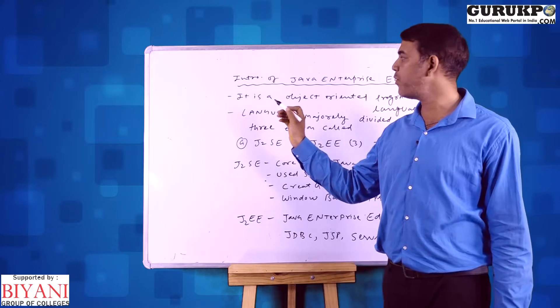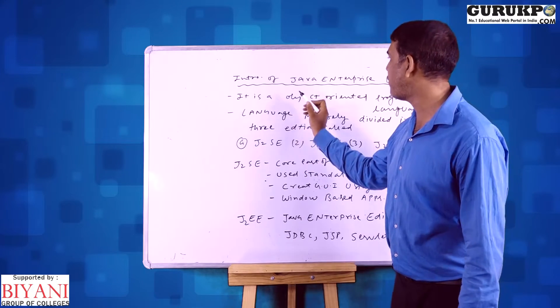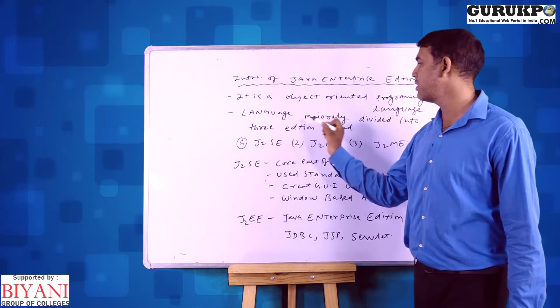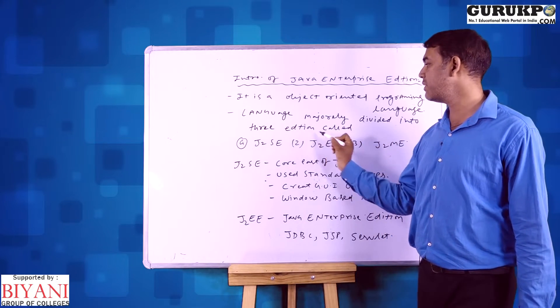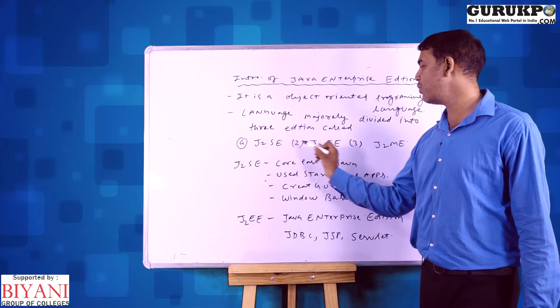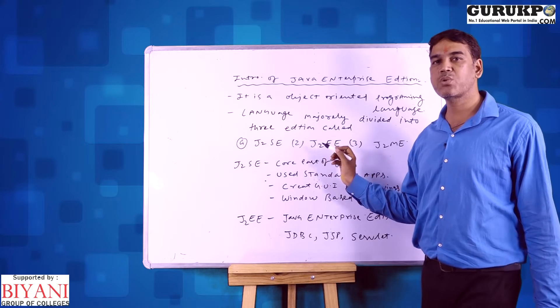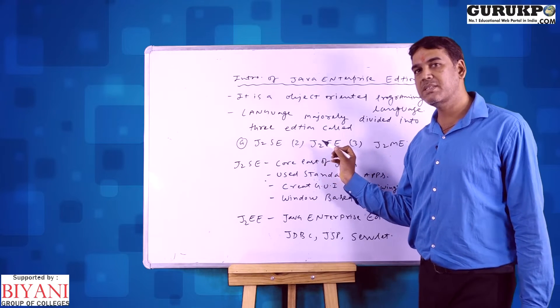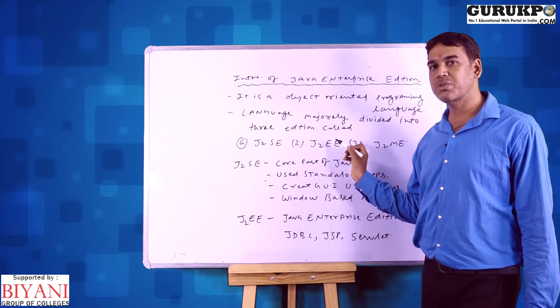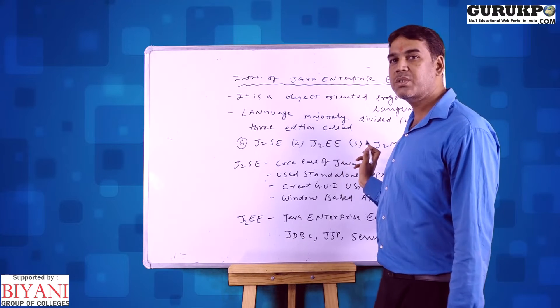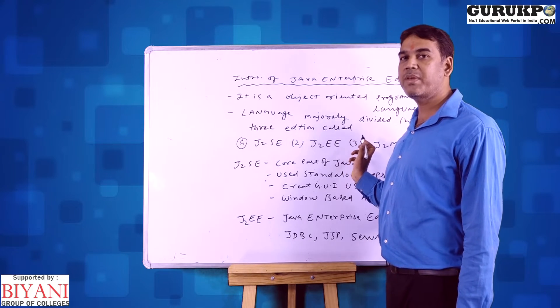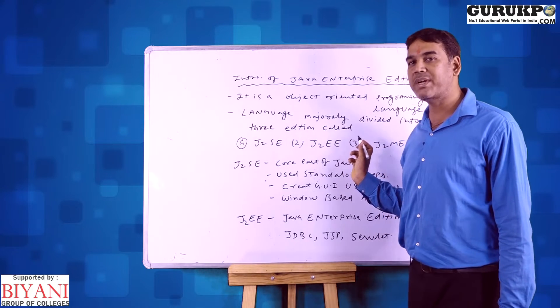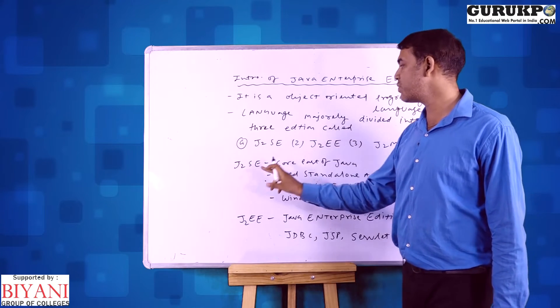We have three types of editions of this language. We have J2SE which is called Standard Edition, second is J2EE which is called Enterprise Edition, and third is J2ME which is called Micro Edition.